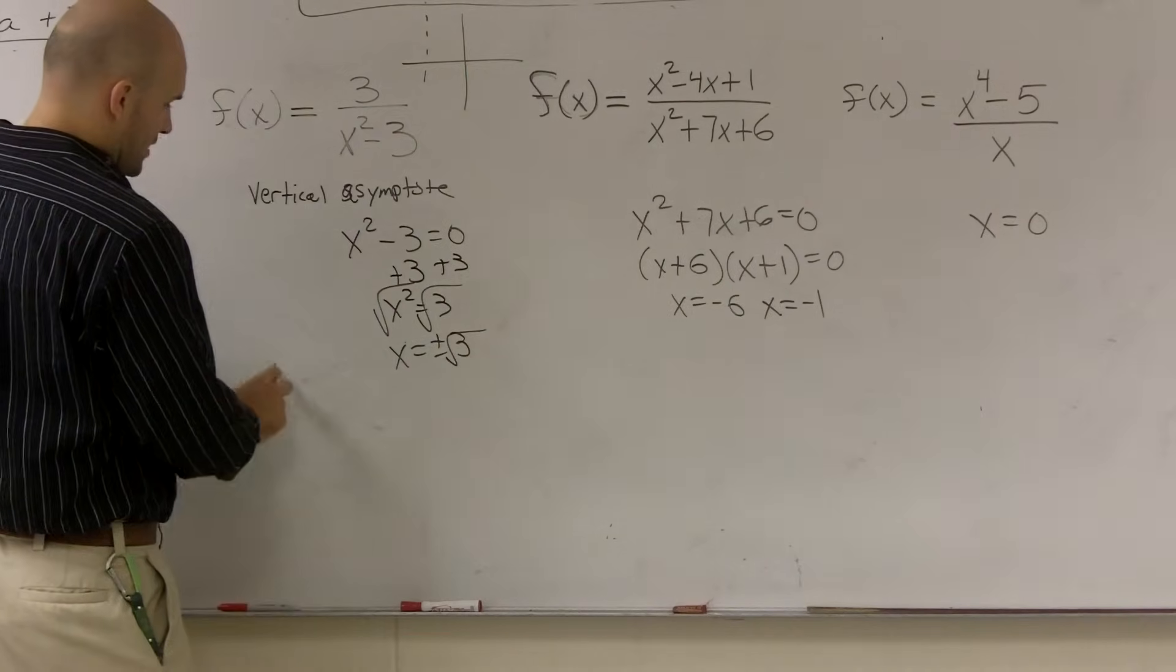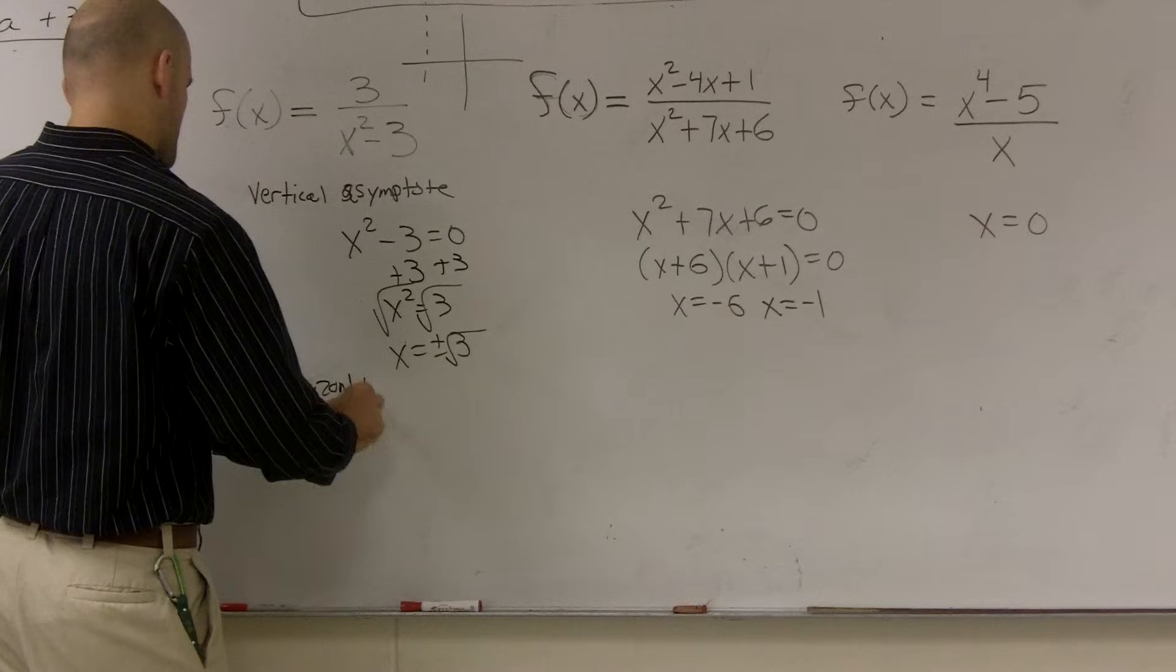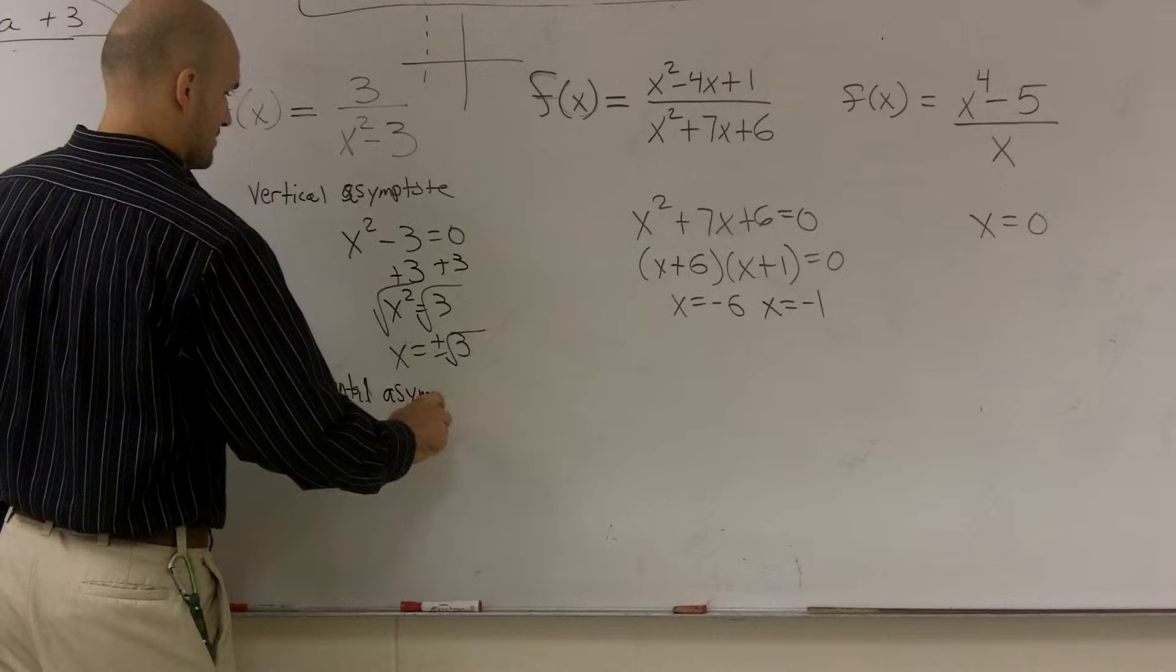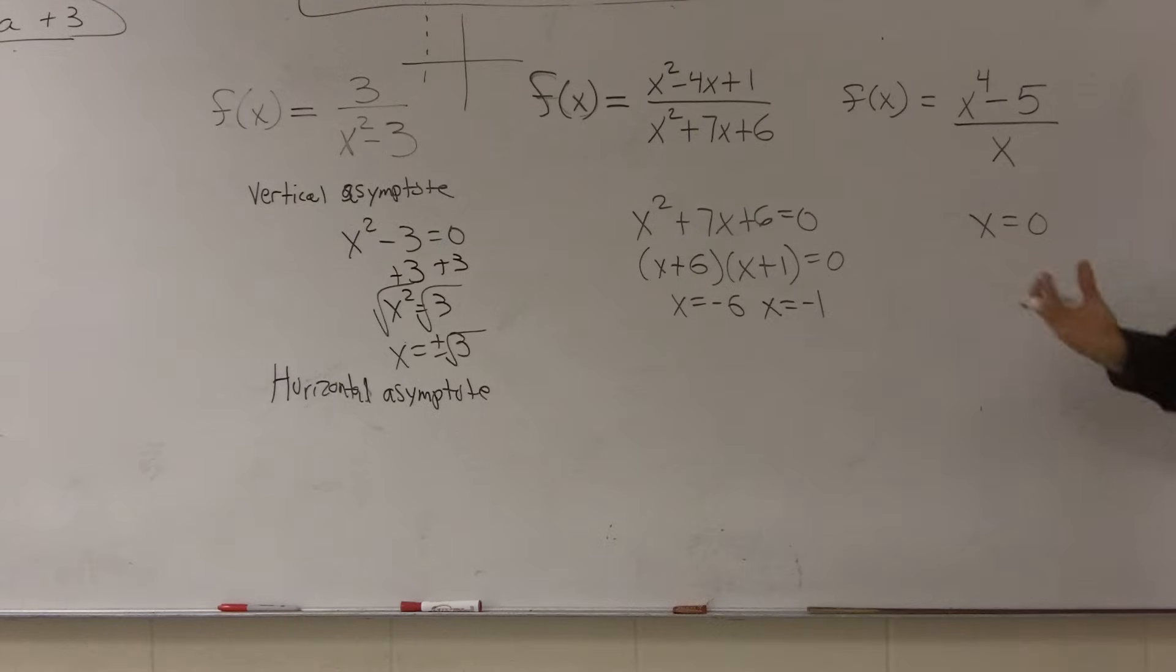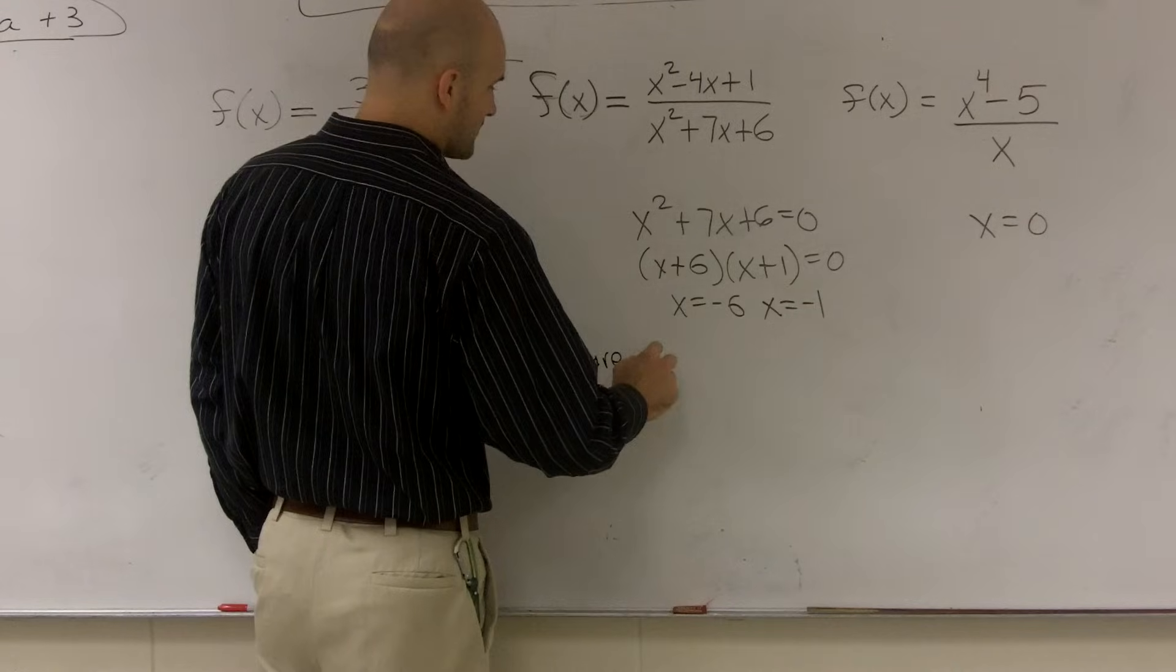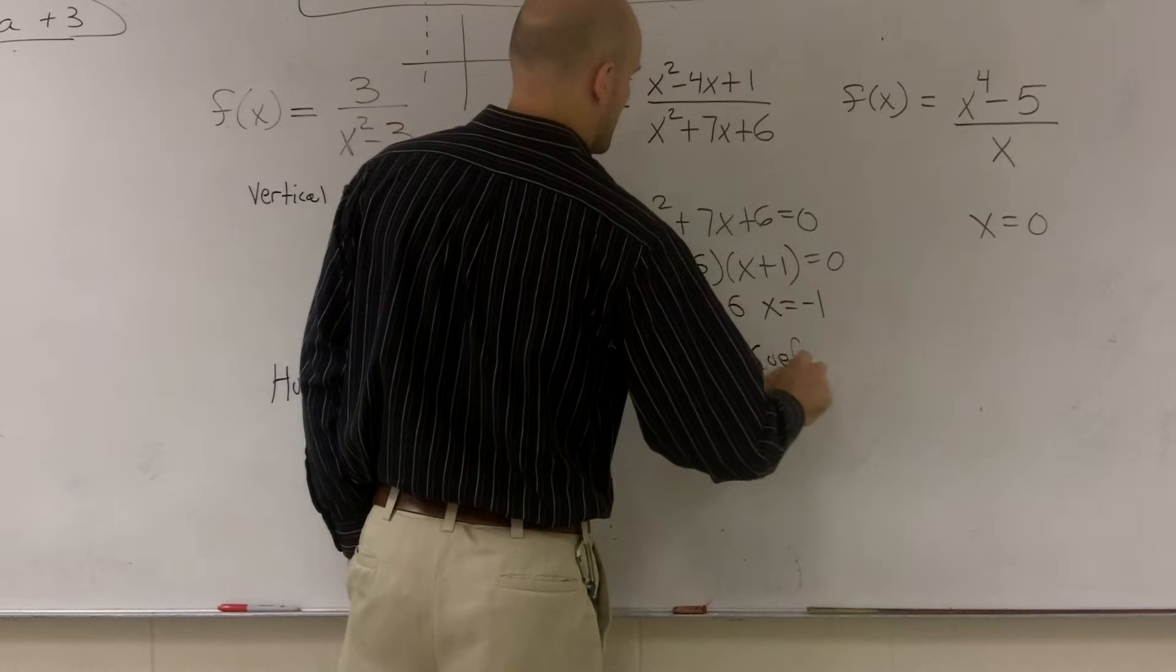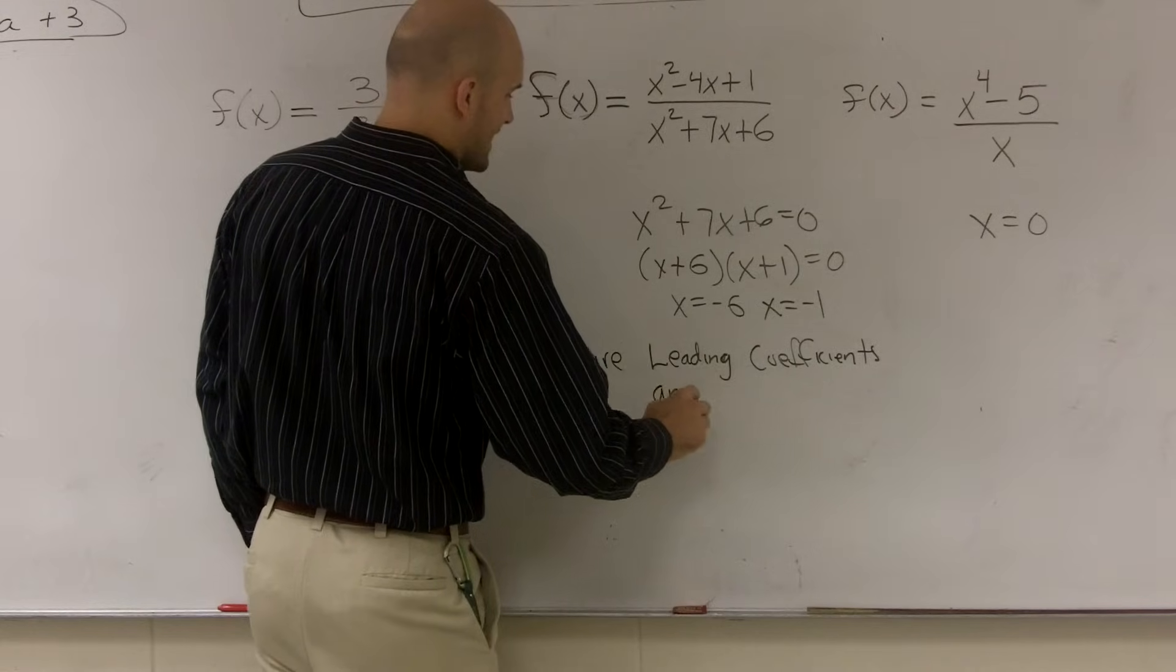So the next one is we need to look at our horizontal asymptote. When you want to find your horizontal asymptote, we're going to look at two things. We need to look at our leading coefficient. So we need to compare our leading coefficients and degrees.